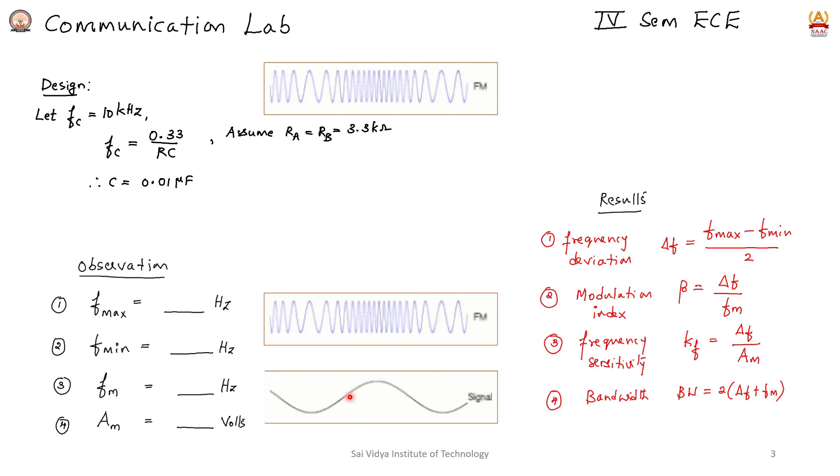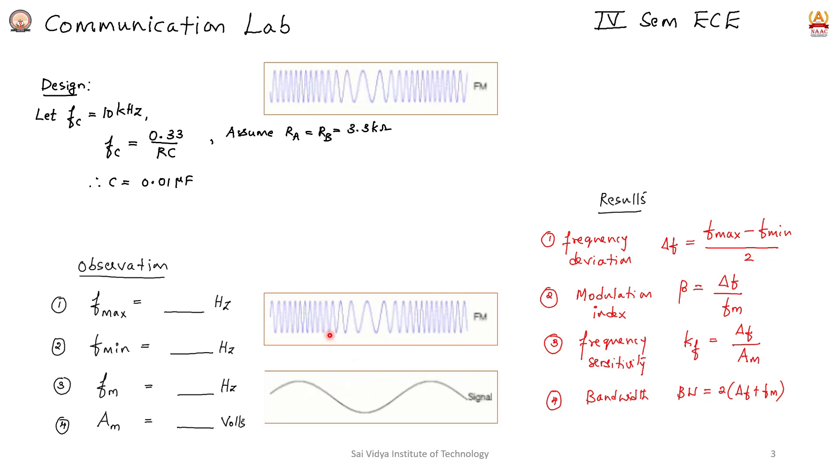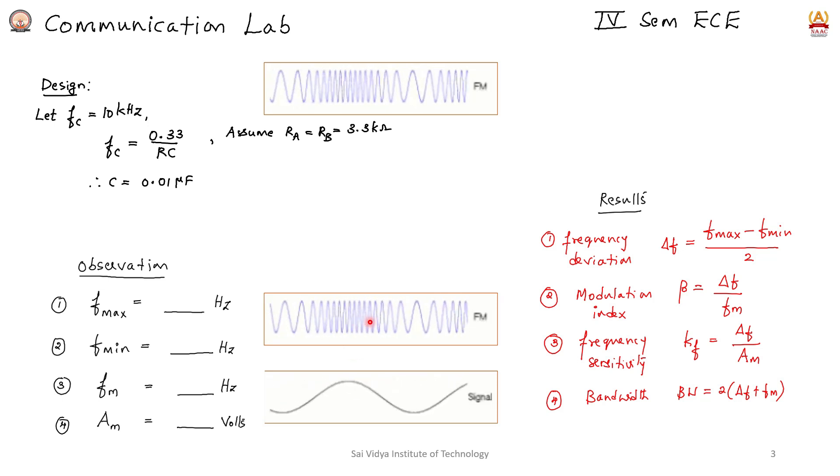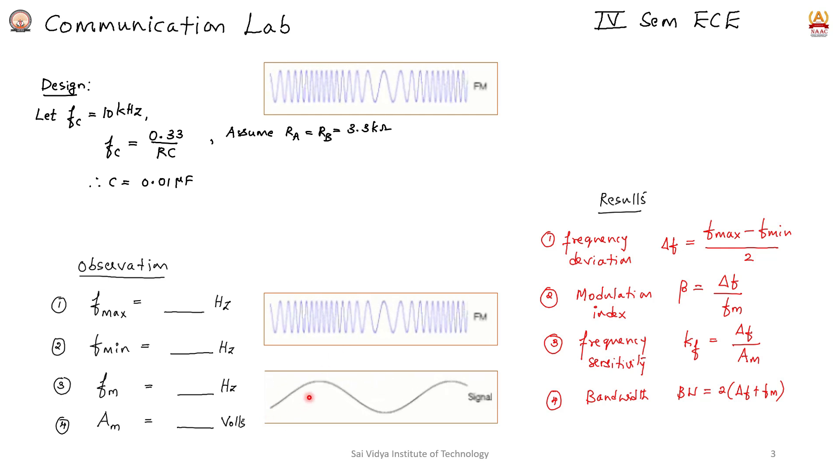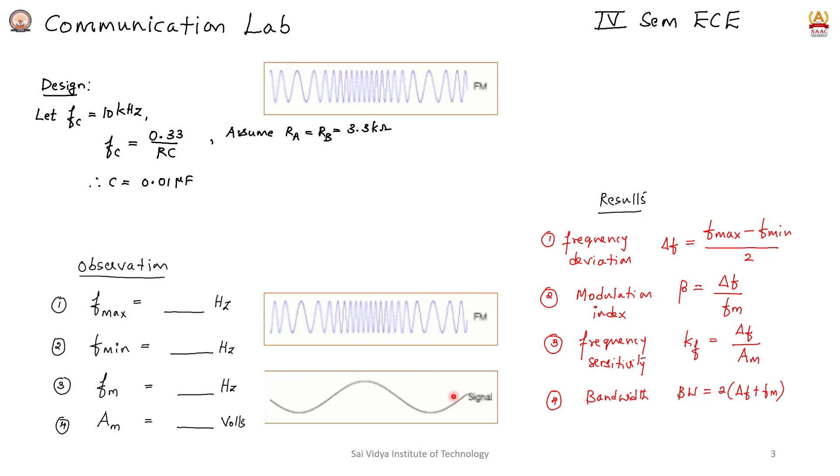This is the definition of frequency modulation, where the characteristic feature of the carrier—the frequency—is varied in accordance with the message signal.